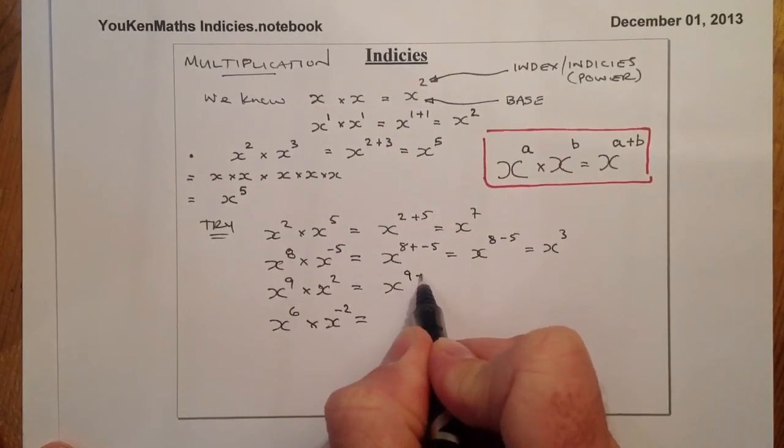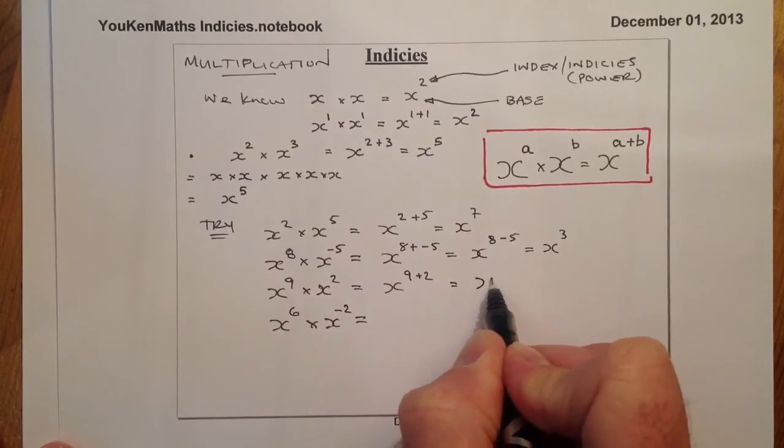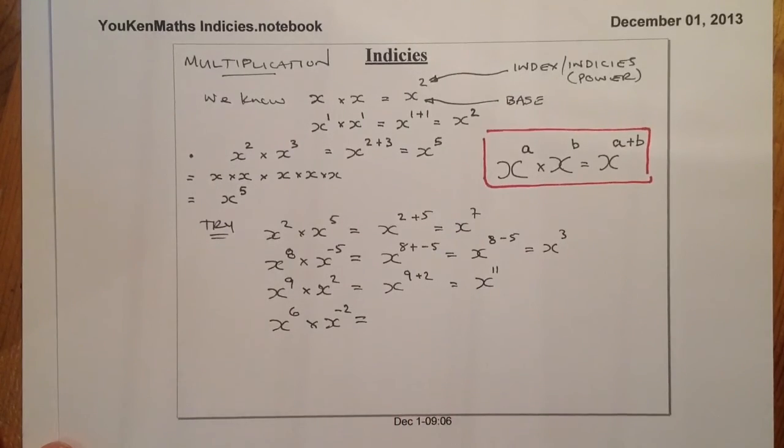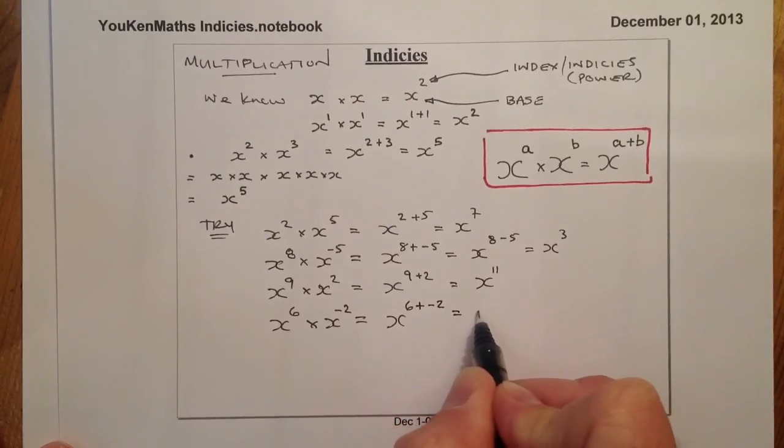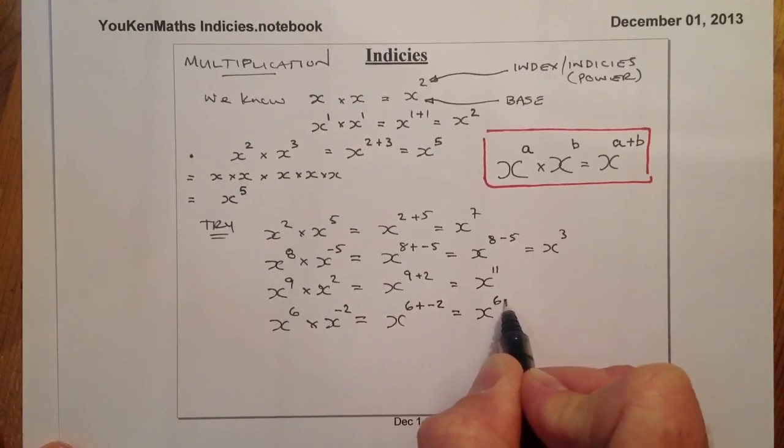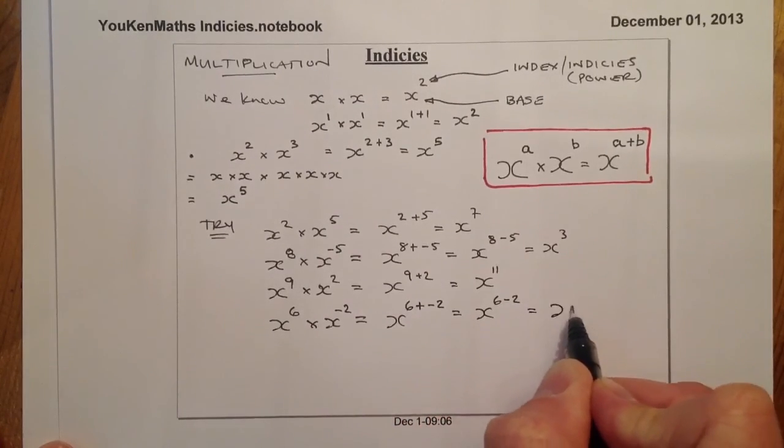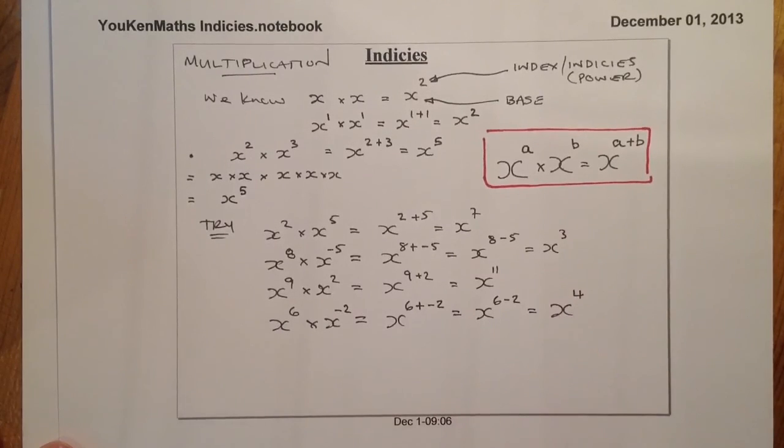x to the power of 9 plus 2 gives me x to the power of 11. And finally, what I have is x to the power of 6, and I'm going to be adding on minus 2. And remember what that will be. That will be 6 minus 2, which gives me x to the power of 4.